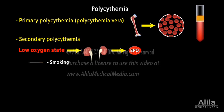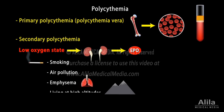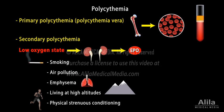Causes of secondary polycythemia include smoking, air pollution, emphysema, living at high altitudes, and physically strenuous conditioning in athletes.